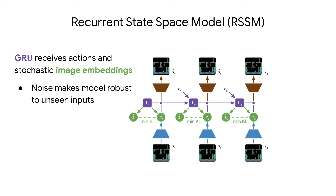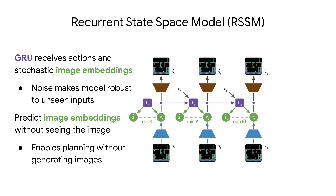For learning the world model, DreamerV2 builds on top of the recurrent state-space model, or RSSM. This consists of a recurrent neural network that receives actions and stochastic image embeddings at every time step. The stochasticity makes the model more robust to unseen inputs. At every time step, the recurrent neural network also tries to predict the next image embedding without actually seeing the image, which enables planning without generating images.